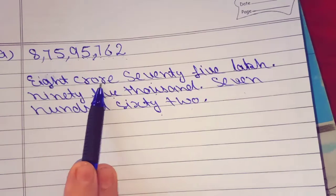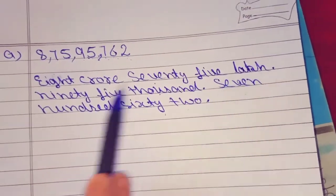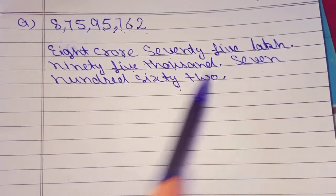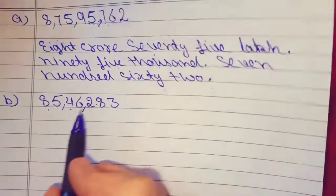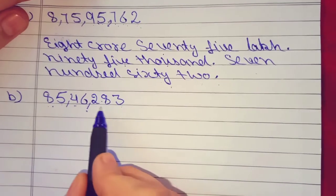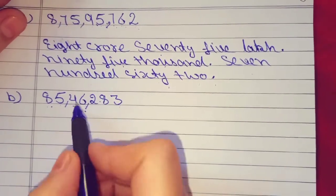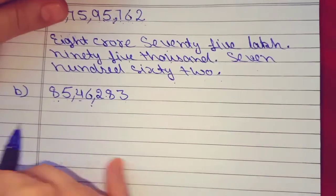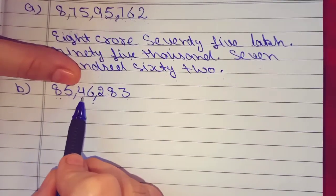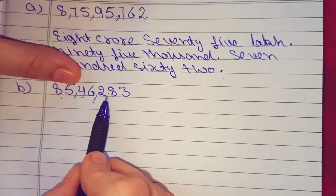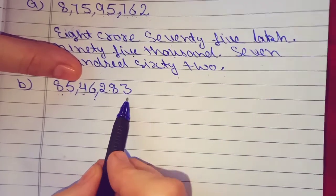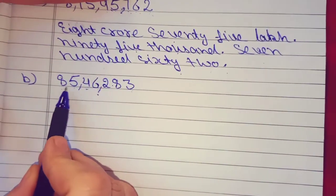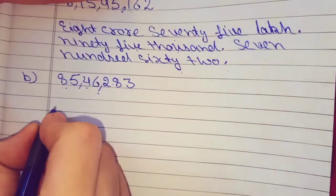B part mein hamare paas figure hai: 8, 5, 4, 6, 2, 8, 3. Commas kaise put honge? 3 ke baad comma, phir 2 ke baad comma. Ab hamare paas yahan pe hai 85. 85 ke aage kitne digits hain? 1, 2, 3, 4, 5 — aur 5 zeros kismein hoti hain? Lakh mein. Toh hum likhenge 85 lakh.